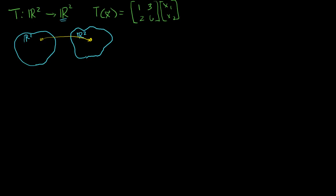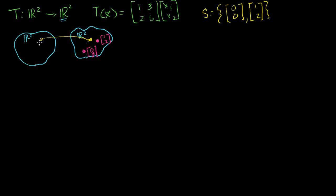What if we take some subset of R2? Let's just say it's a set of two vectors: the zero vector in R2 and the vector (1, 2). What I want to know is: what are all of the vectors in my domain whose transformations map to this subset? So I want to know the pre-image of S.